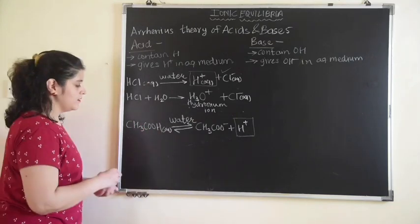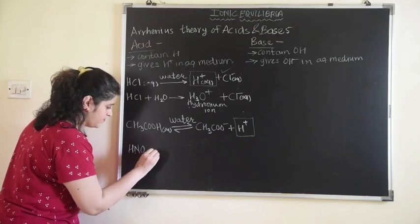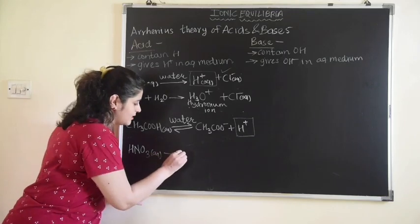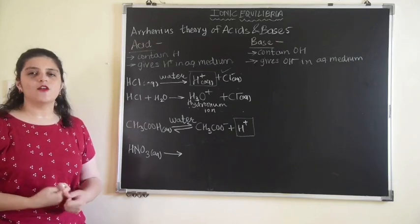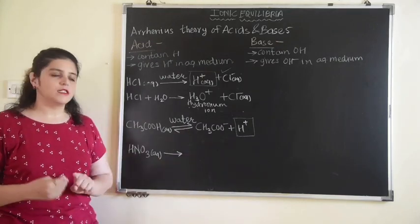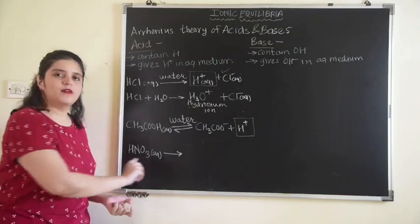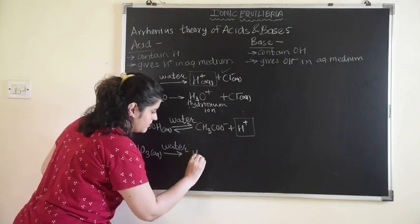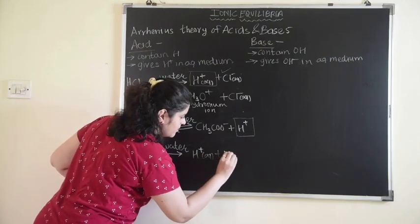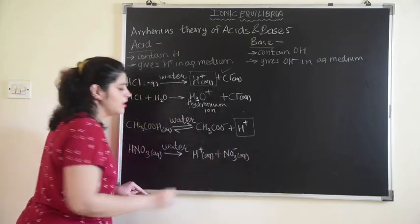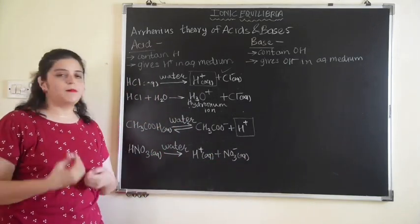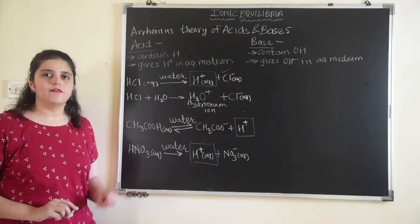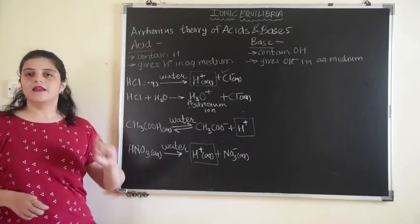Let us take the example of HNO₃. HNO₃ is a strong acid, so it is represented by an irreversible arrow. HNO₃ dissolved in water gives H⁺ (aq) plus NO₃⁻ (aq). Since we get H⁺ when HNO₃ is dissolved in water, we can also say that HNO₃ is an Arrhenius acid.